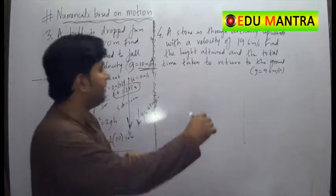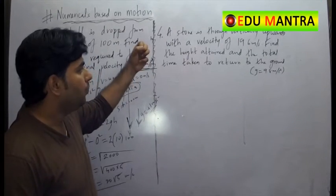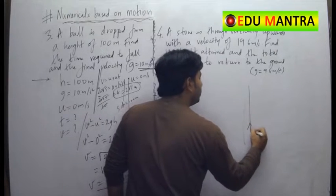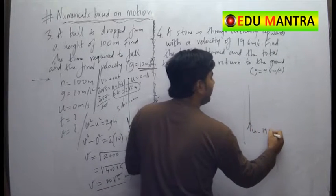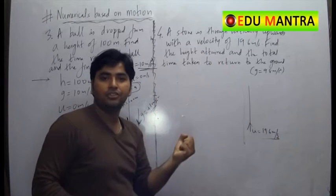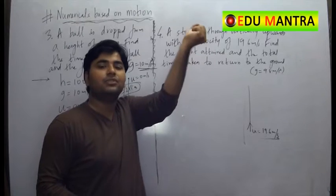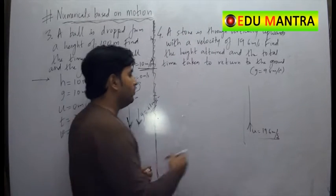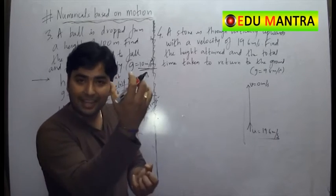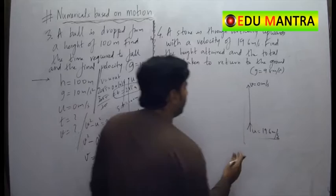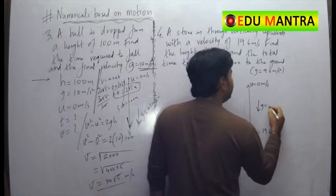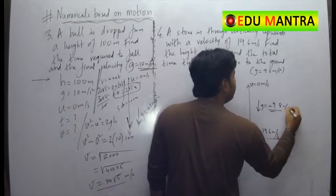In the next problem, a stone is thrown vertically upwards with a velocity of 19.6 meters per second. As it goes up, the velocity decreases. At the highest point, the velocity will become 0 meters per second. Since the motion is upward and gravity acts downward — opposite directions — I will take gravity as negative: minus 9.8 meters per second squared.